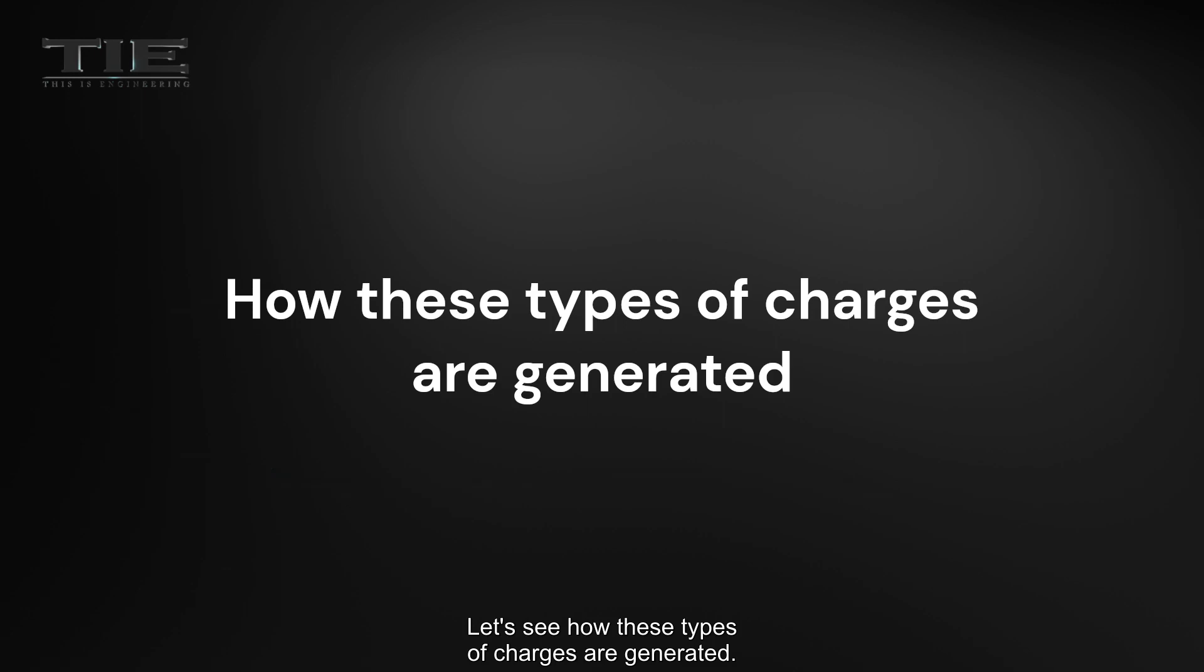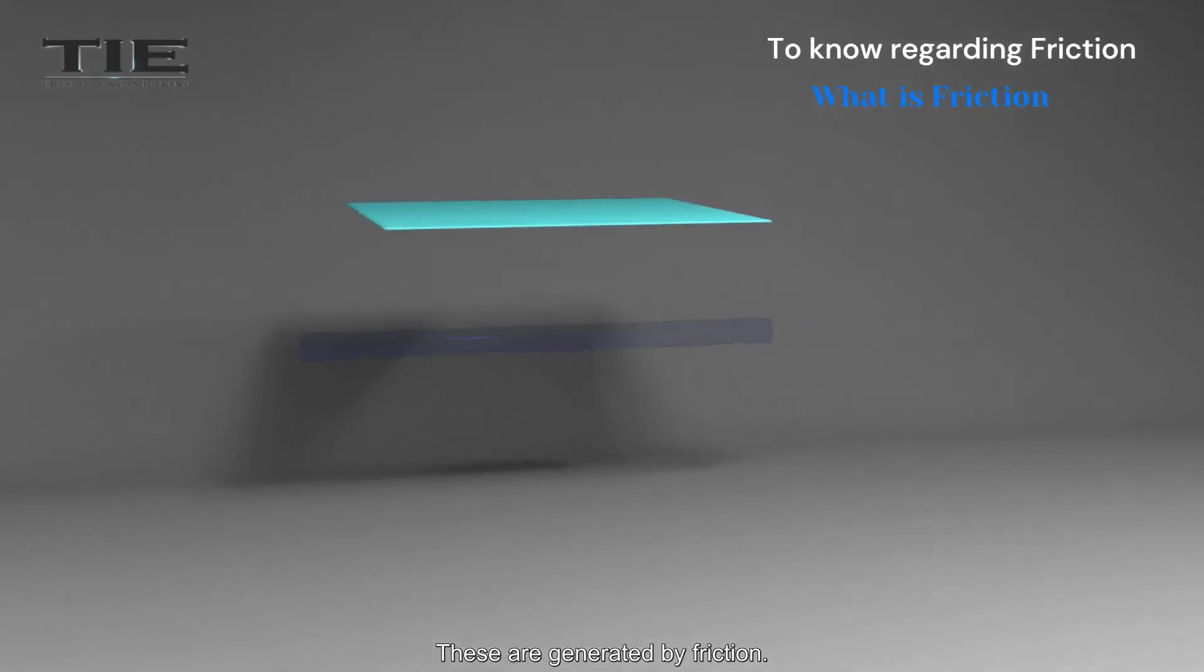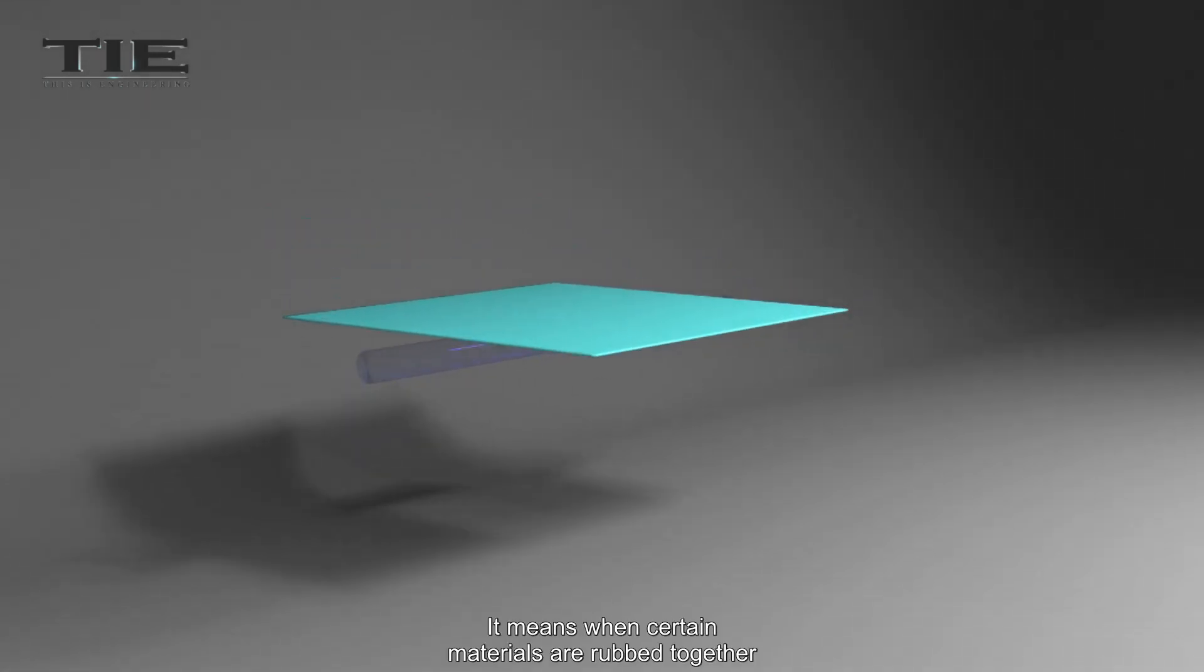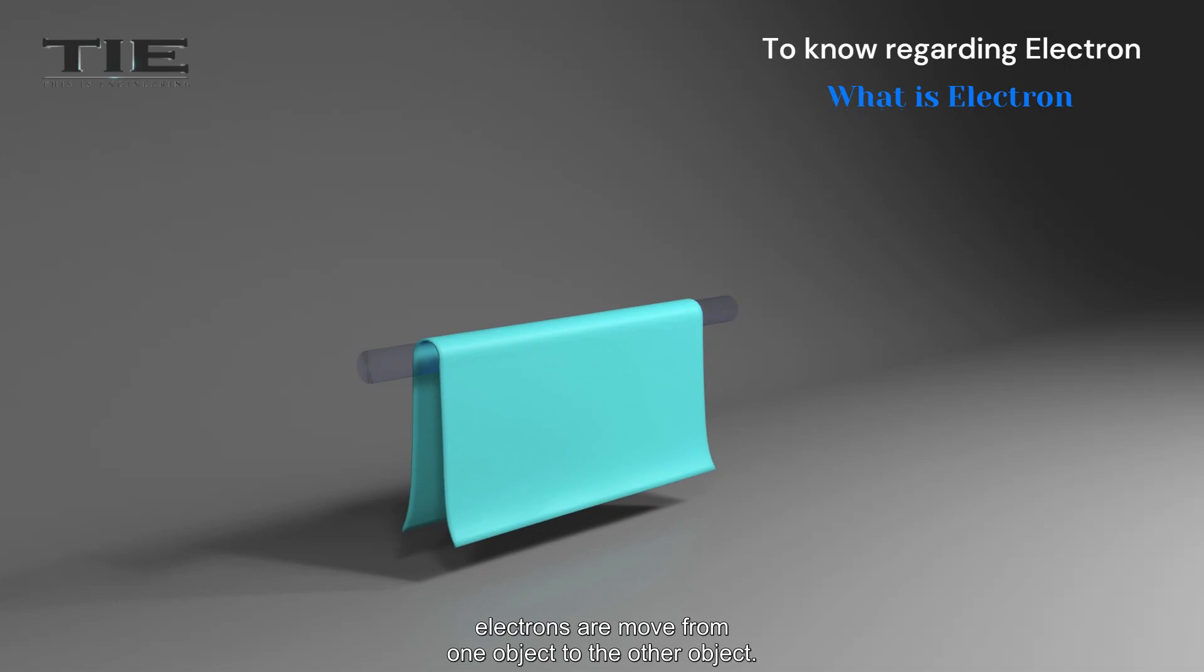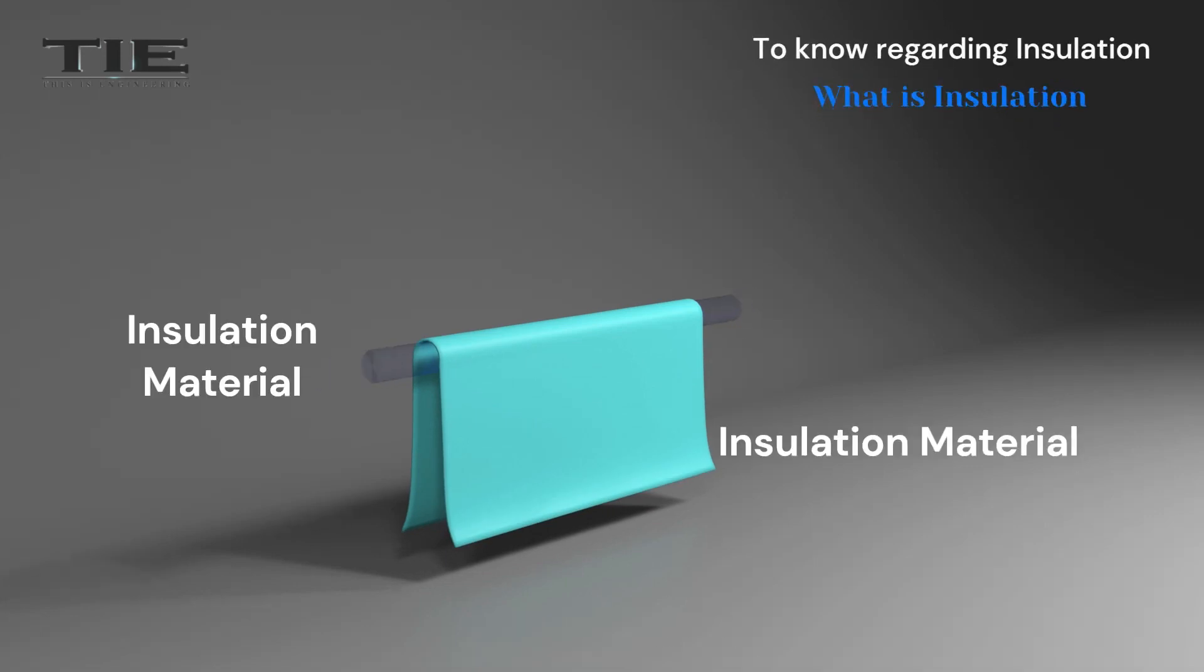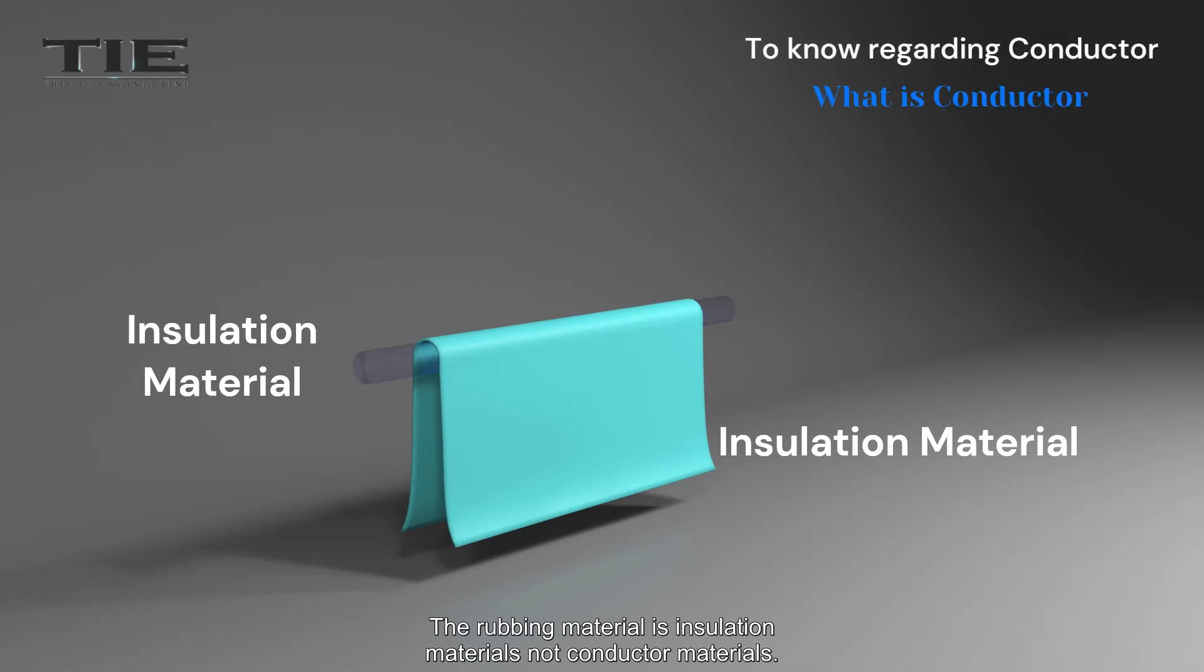Let's see how these types of charges are generated. These are generated by friction. It means when certain materials are rubbed together, electrons are moved from one object to the other object. The rubbing material is insulation materials, not conductor materials.